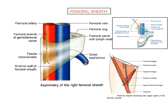Here is the femoral sheath. It is a funnel-shaped sleeve of fascia enclosing the upper three to four centimeters of the femoral vessels. Now we will see how the formation of this femoral sheath occurs.